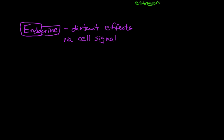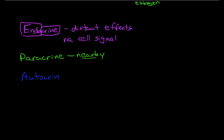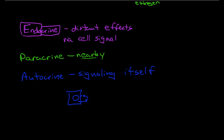Other types of cell signaling by chemicals include paracrine signaling, which is cell signaling that occurs nearby — not distant — such as a pancreatic cell signaling another pancreatic cell. There is also autocrine signaling, where a cell actually signals itself. This might happen because the cell secretes a protein and then the cell itself has a receptor for that protein. Sometimes autocrine and paracrine signaling occur at the same time, because while a cell is signaling itself it may also be signaling cells around it.